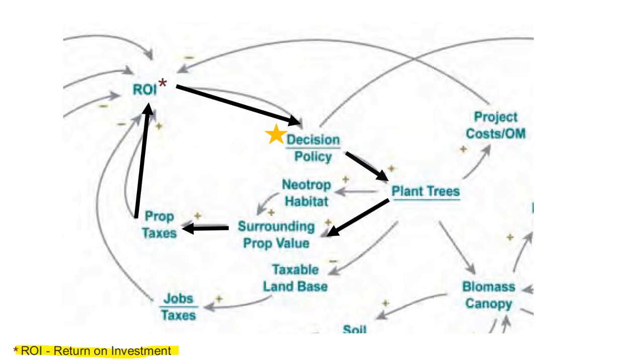And that in turn will affect whether our policy will be implemented or if it's already been implemented, if it will stay in place. So now we've completed one loop that makes up this causal loop diagram.